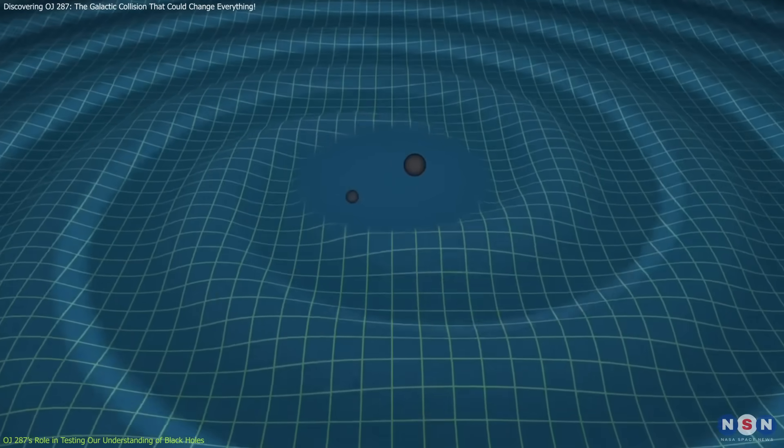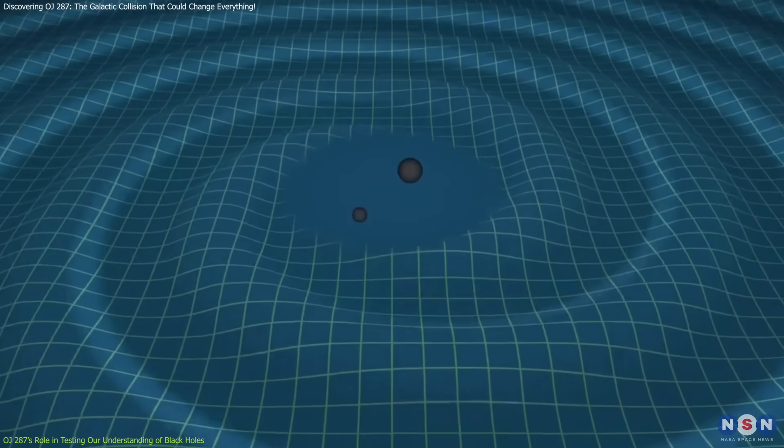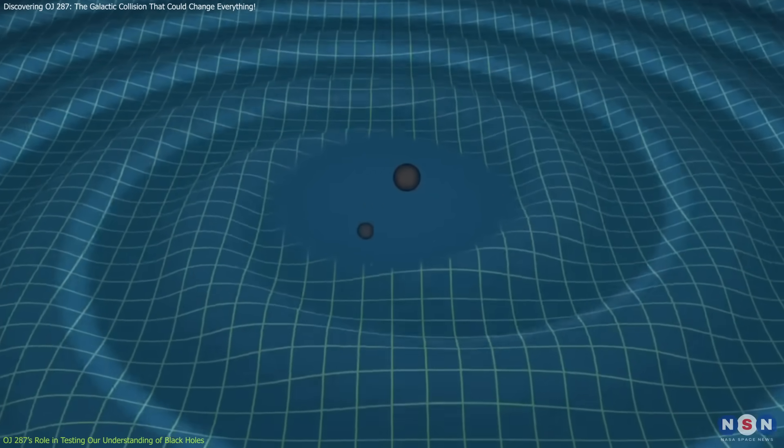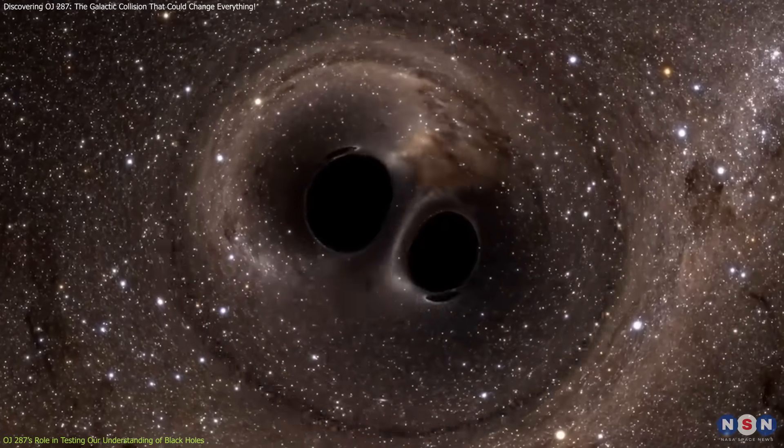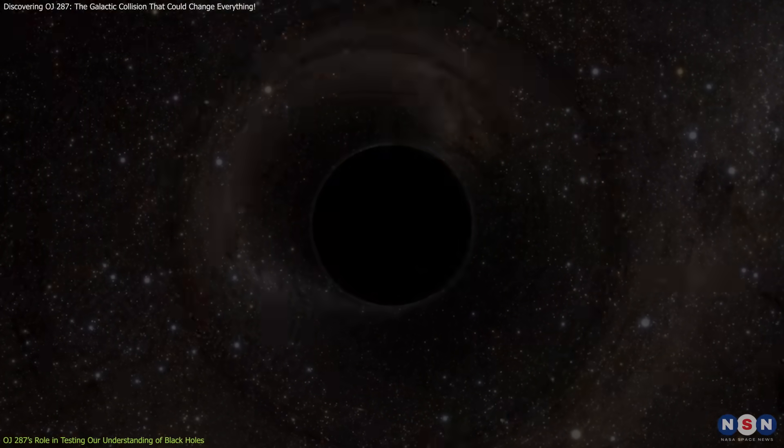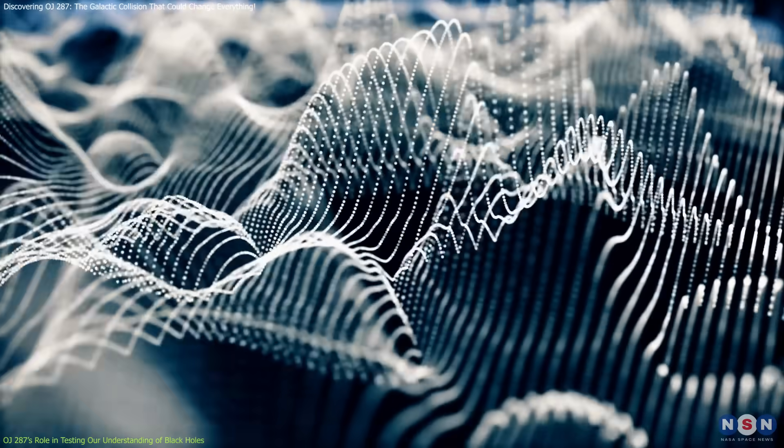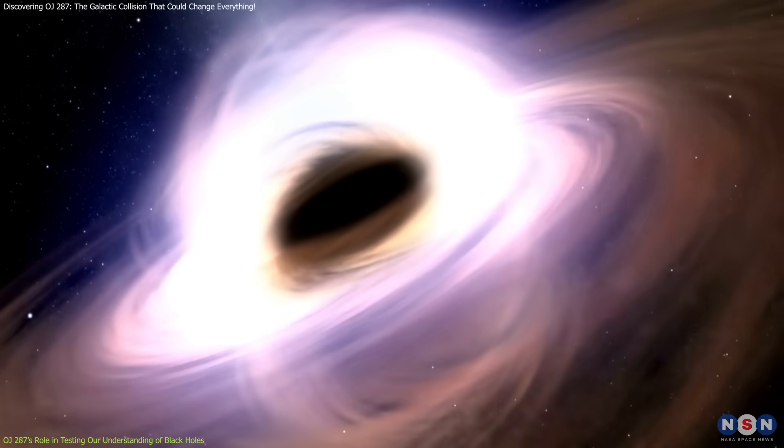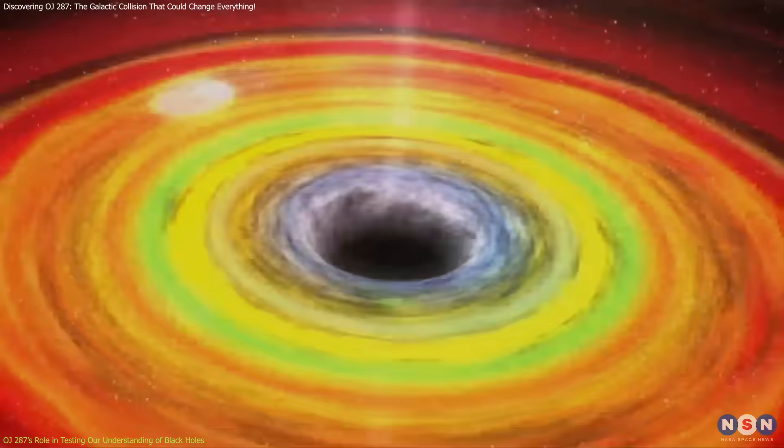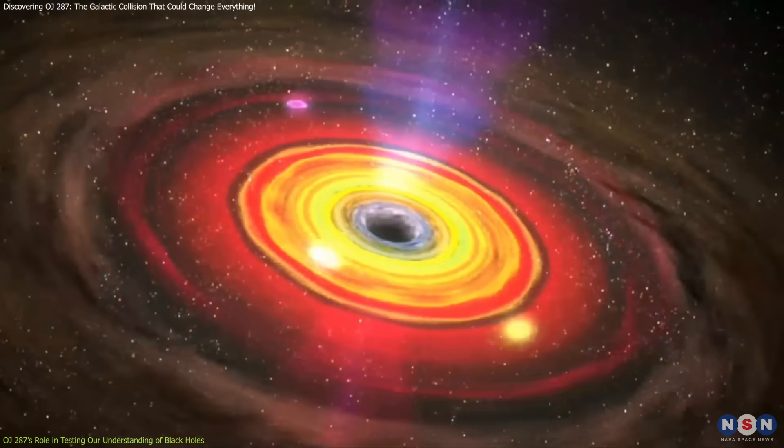The gravitational waves emitted by the two black holes in OJ 287 are expected to provide critical data for refining our models of black hole mergers. By studying the signals from these waves, scientists can gain a deeper understanding of how supermassive black holes evolve and the role they play in the formation of galaxies.